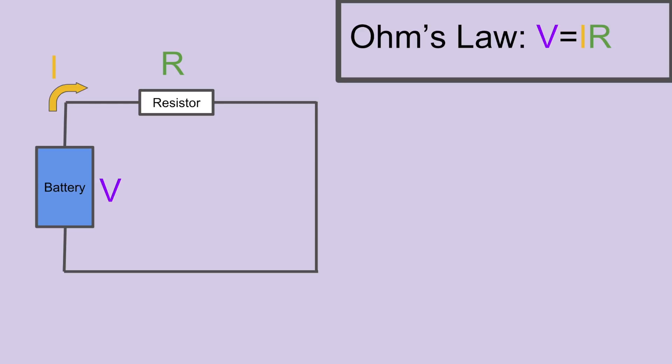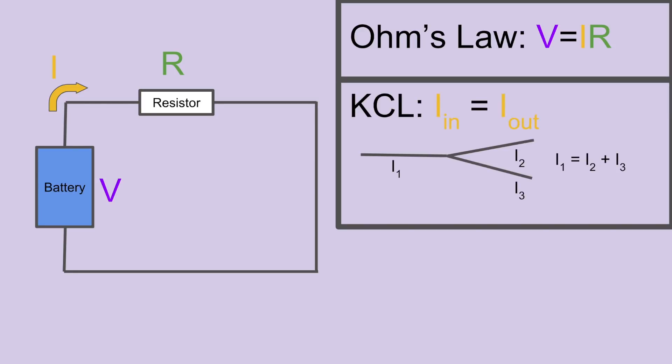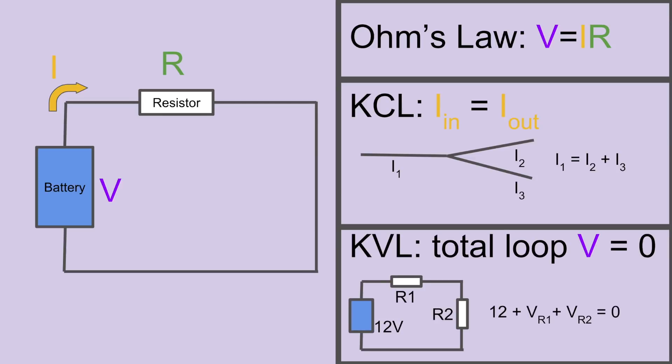You recognize Ohm's law, Kirchhoff's current law, which states that the current going into a node is equal to the current going out of a node, and Kirchhoff's voltage law, which says that the sum of the voltages in any loop is zero.